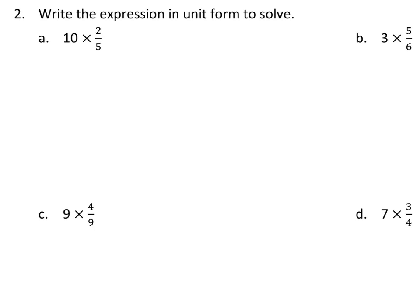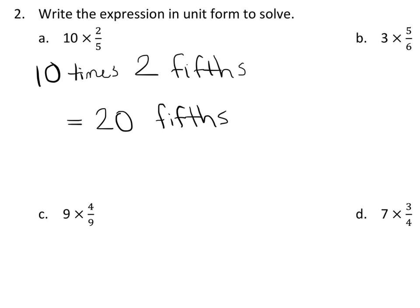you would be writing 10 times 2 fifths equals 20 fifths. And guess what? It is done. That's it. They want you to write the unit forms. And they want you to explain that if you had 10 sets, basically, 10 sets of 2 fifths, you would have 20 fifths total. Done. That's it.